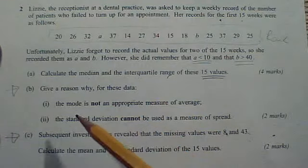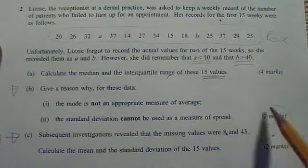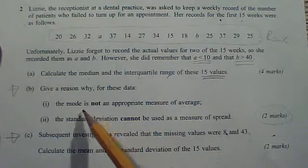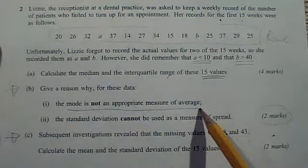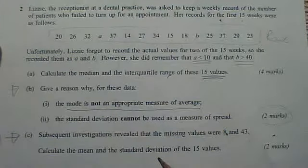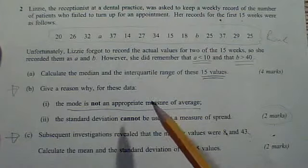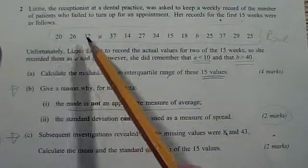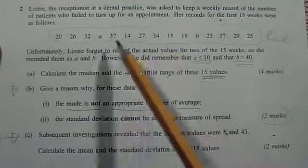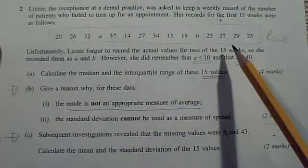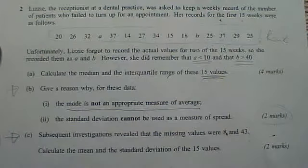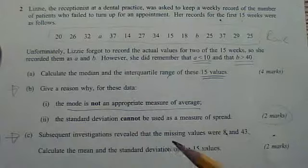On to part B, we need two marks, so it's going to be a mark for each. We need one reason why the mode is not an appropriate measure of average, remembering what the mode is, it's the most common value. So you can simply look at the kinds of values you've got, okay, and point to a problem that the mode would give you. The mark scheme will help if, I can't say any more without giving that away I don't think.